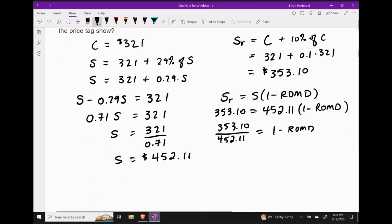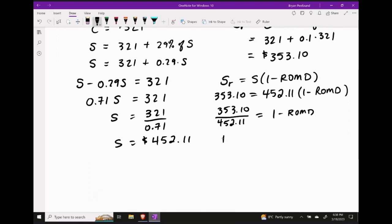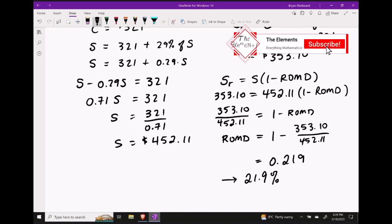And like we've done before, since we want to solve for the rate of markdown, let's move that over to the left-hand side. That's going to cause it to become positive instead of negative. I'm going to leave this 1 where it is, and then I'm going to subtract the fraction 353.1 over 452.11. Performing this subtraction and rounding correctly to 4 decimal places, we get 0.219, which means that the Home Depot should be advertising a 21.9% markdown.